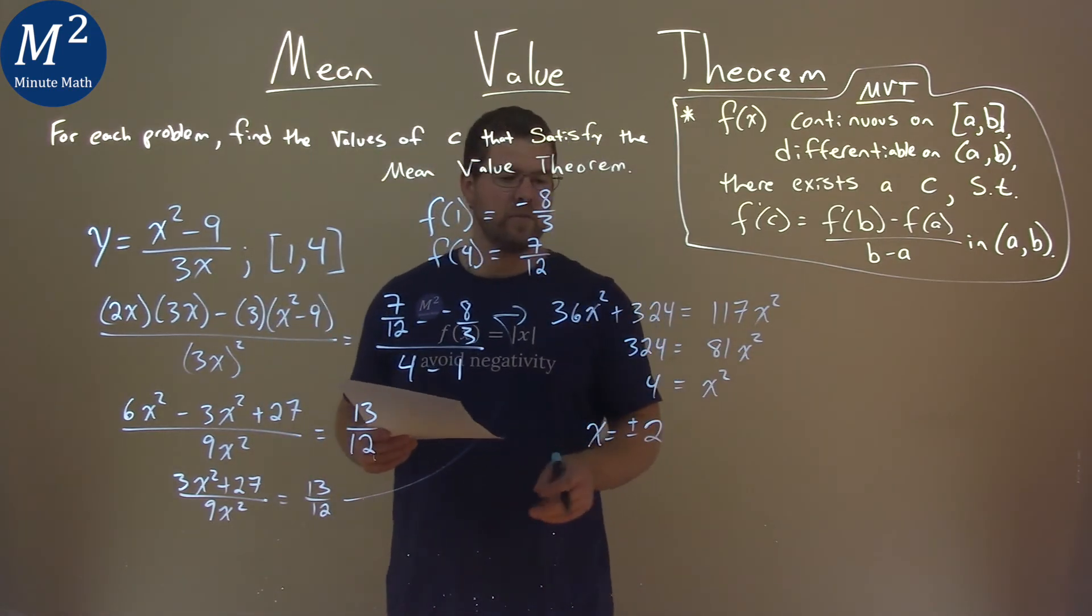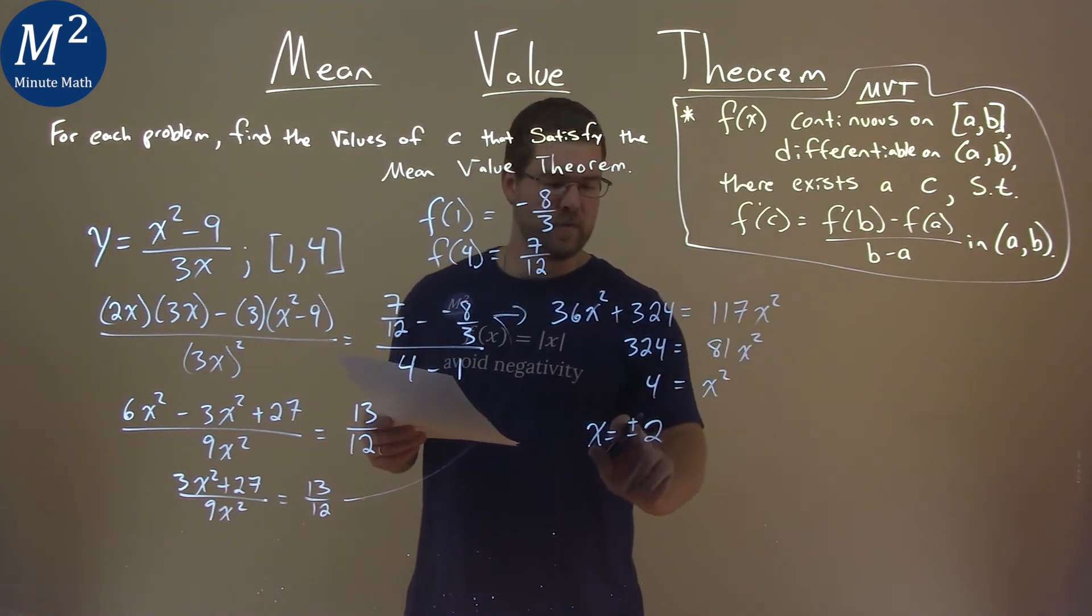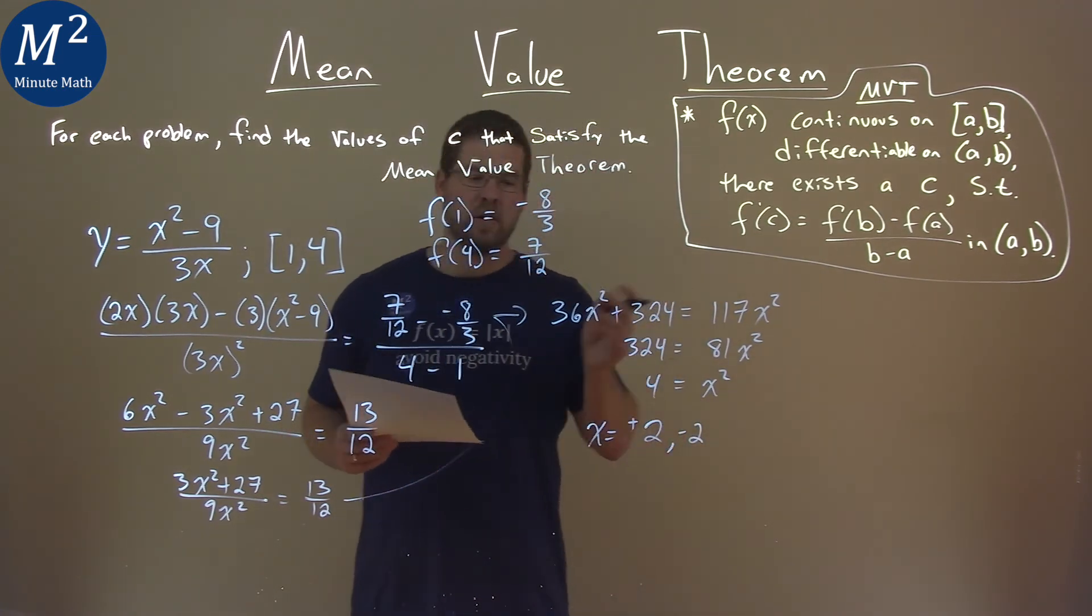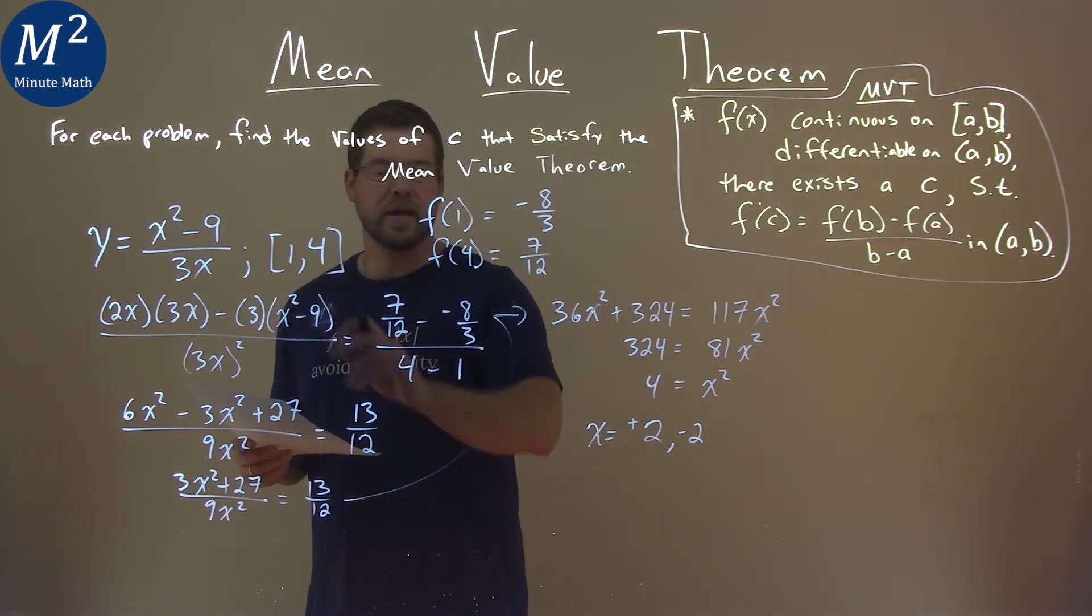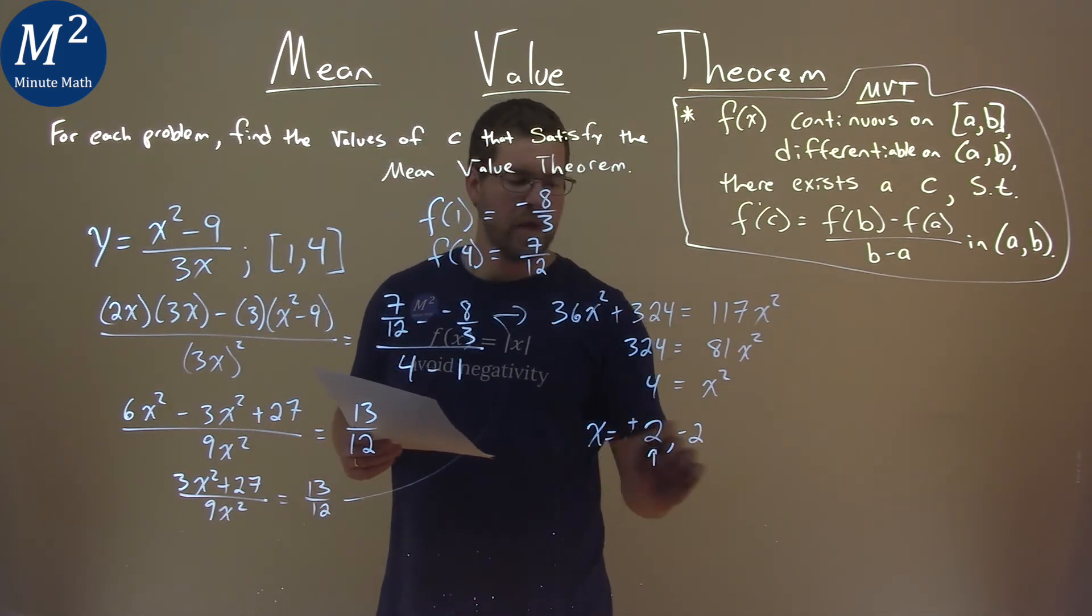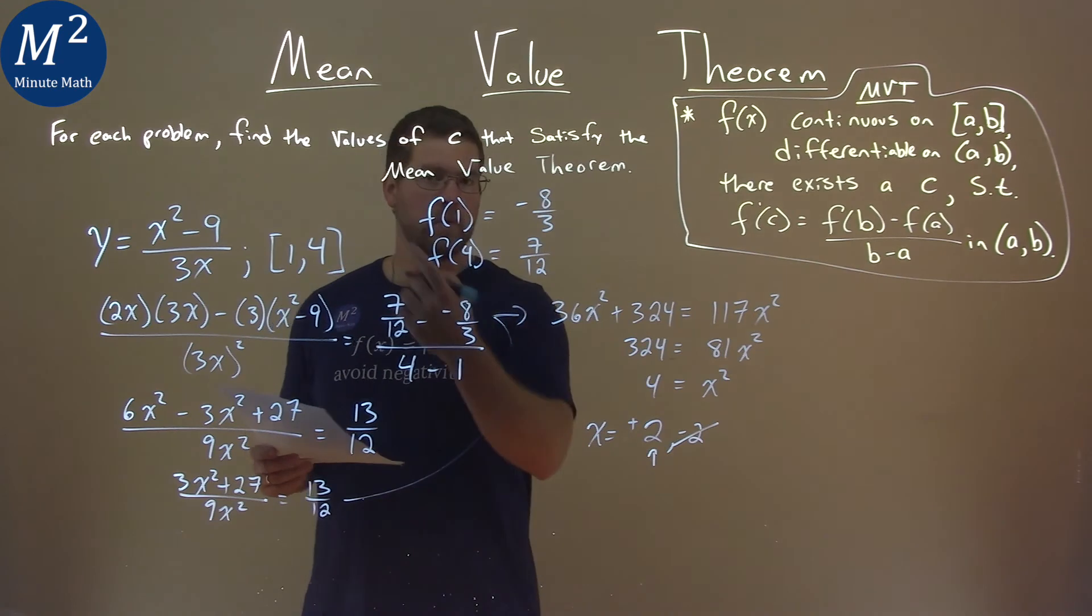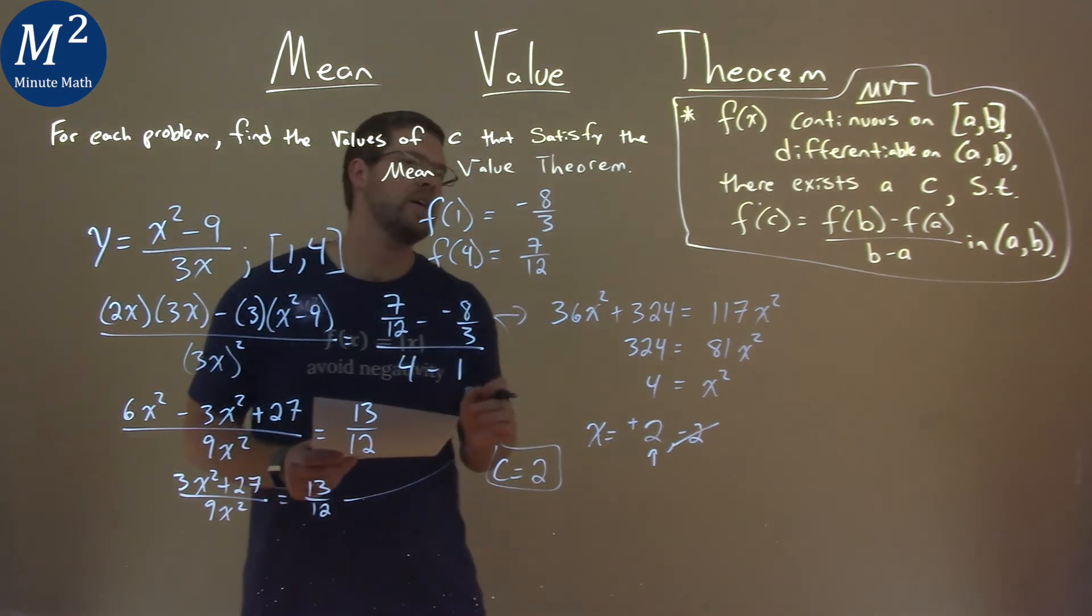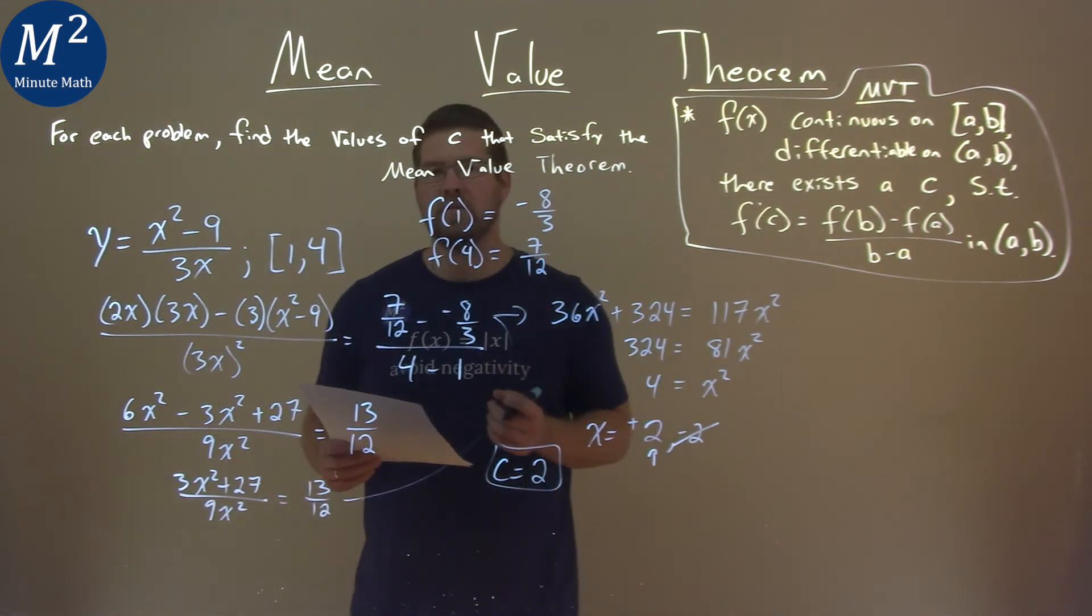Now we have two values. We have positive and negative 2. Only one of them is within our interval. And that's positive 2. Negative 2 is outside the interval. And so we can't use the negative 2, only the positive 2. And so our c value of being 2 is the value of c that satisfies the mean value theorem.